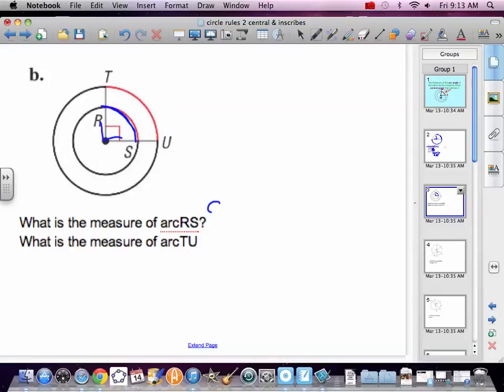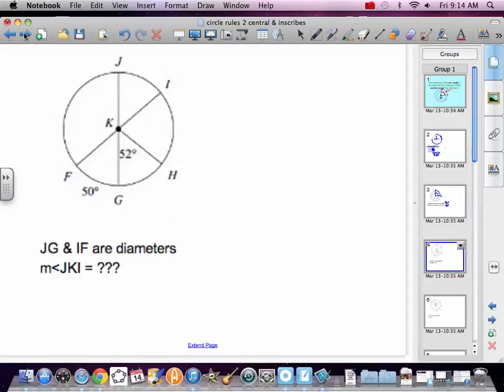It's a 90 degree angle. So that arc is 90 degrees. And arc TU. So from T to U. Well, again, it's being caught by a 90 degree angle.